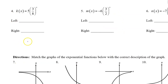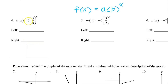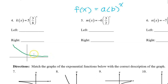Number four, let's draw the sketch. Because the a value is positive, we know that k of x will be above the x-axis. Because the b value is less than one — or rather between zero and one — this is an exponential decay function. And k of x will be decreasing from left to right as we approach the x-axis asymptotically. So as we head towards the left, k of x is rising. Therefore, the limit as x approaches negative infinity is infinity.